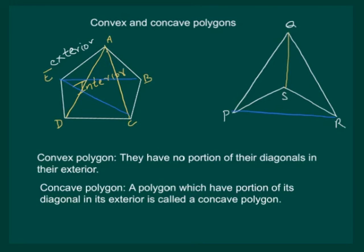And that means that PQRS is a concave polygon. But in this class, we will only deal with convex polygons.